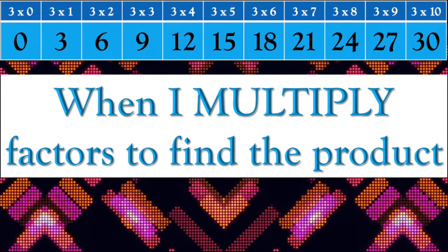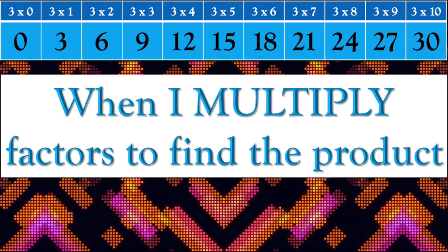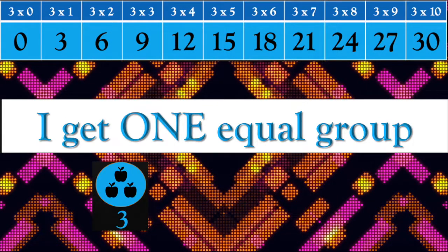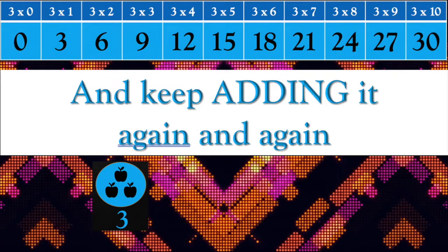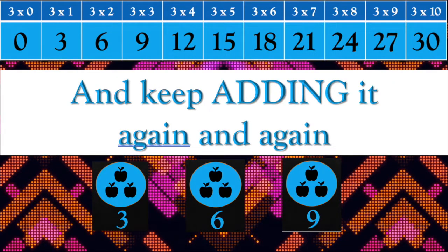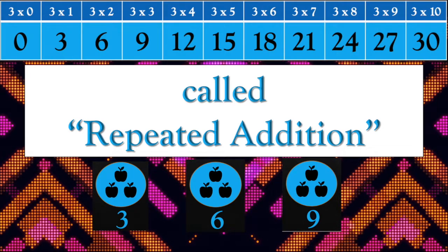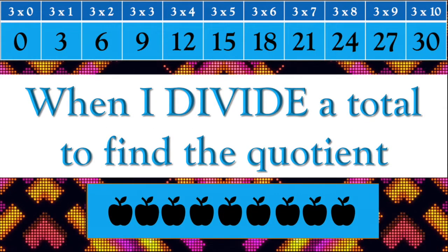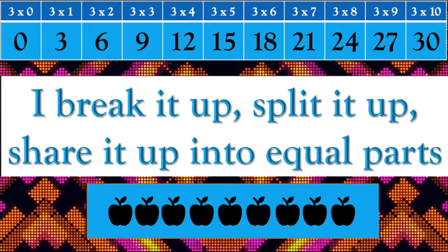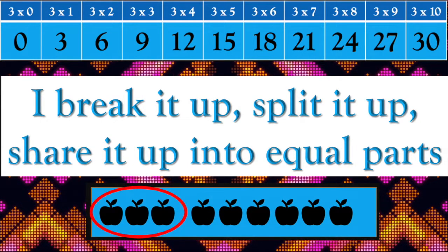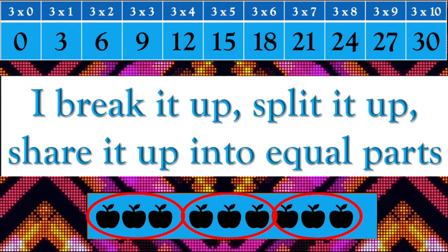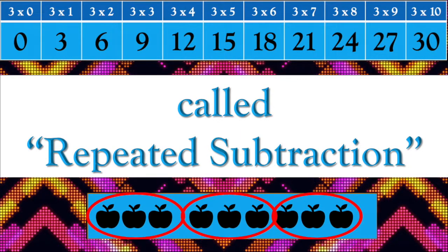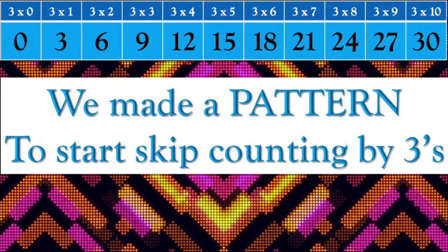When I multiply factors to find the product, I get one equal group and keep adding it again and again — called repeated addition. When I divide a total to find the quotient, I break it, I'll split it up, share it up into equal parts — call repeated subtraction.